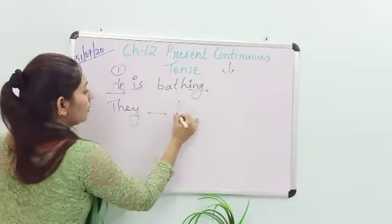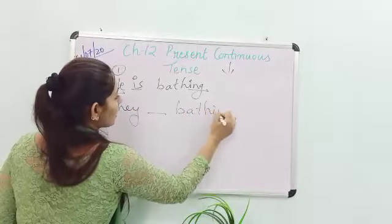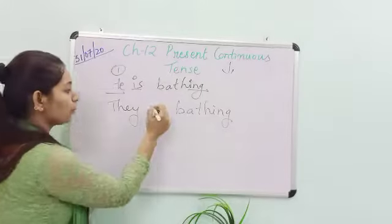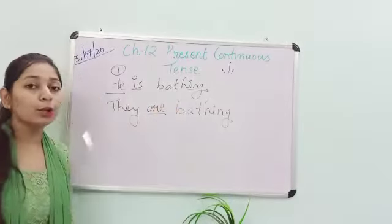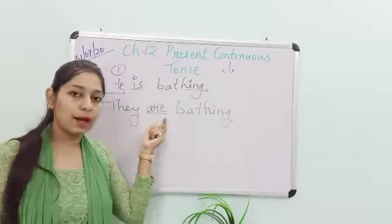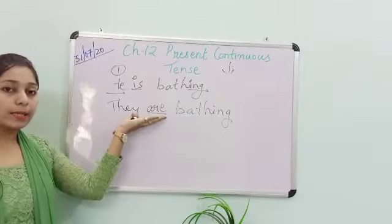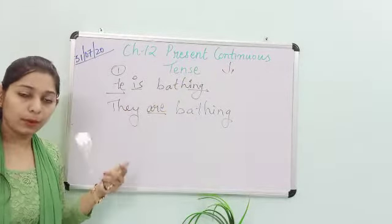If I say they are bathing. To yaha pe they laga hai. It is a plural subject. To plural ke saath we have to use are. To plural ke saath we have used here are. To that will be your simple present continuous tense.